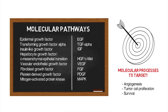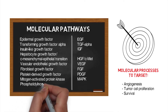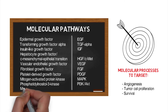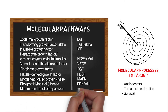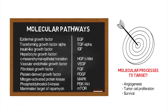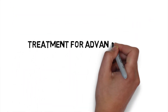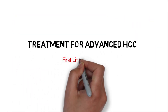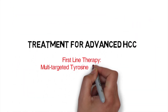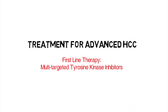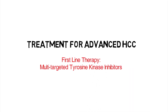Also, the PI3 kinase pathway in AKT and mTOR have been shown to play a role in the pathogenesis of liver cancer. For patients with advanced HCC, multi-targeted tyrosine kinase inhibitors, or TKIs, are the most appropriate first-line treatment option.